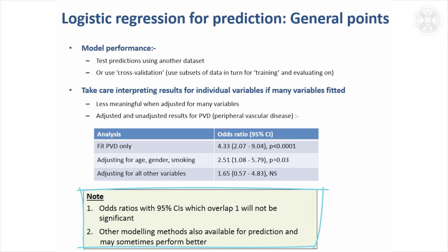I think last time I said, if you've got a confidence interval and it didn't overlap zero, it would be equivalent to having a significant result at the 5% level. Well, for odds ratios, the equivalent number is one, because an odds ratio of one means there's no difference between, say, smokers and non-smokers.